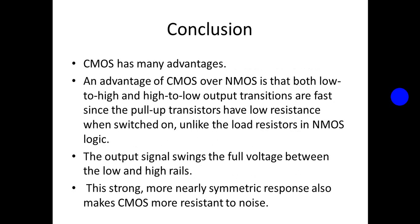In conclusion, CMOS has many advantages. An advantage of CMOS over NMOS is that both low-to-high and high-to-low output transitions are fast, since the pull-up transistors have low resistance when switched on, unlike the resistors used in NMOS logic. The output signal also swings the full voltage between the low and high rails, and this strong, nearly symmetric response makes CMOS more resistant to noise.